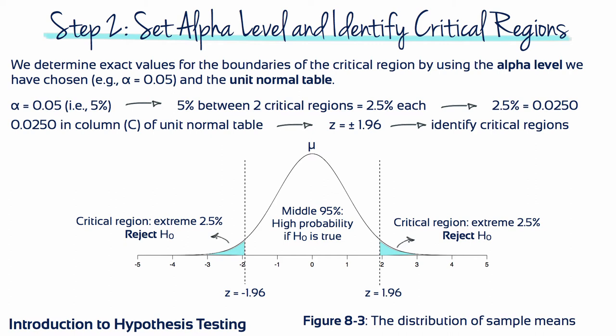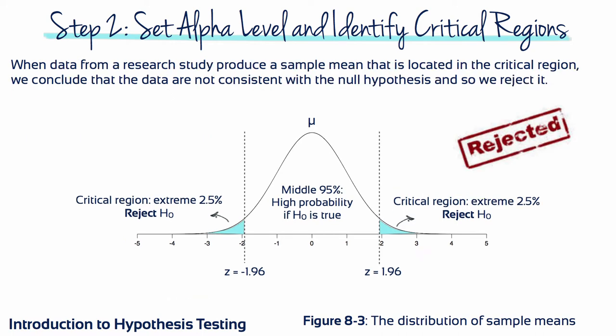5% divided between two critical regions is 2.5% each. 0.0250 in column C of the unit normal table gives us z-score values of plus or minus 1.96. These z-score values are the boundaries that identify the critical regions. When data from a research study produce a sample mean located in the critical region, we conclude that the data are not consistent with the null hypothesis, and so we reject it.